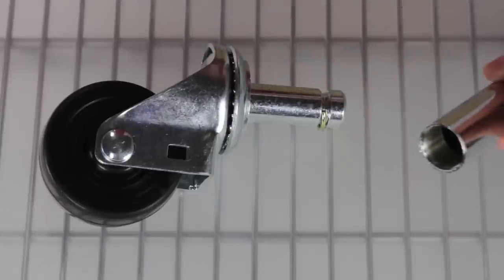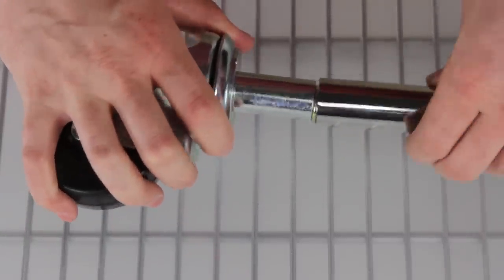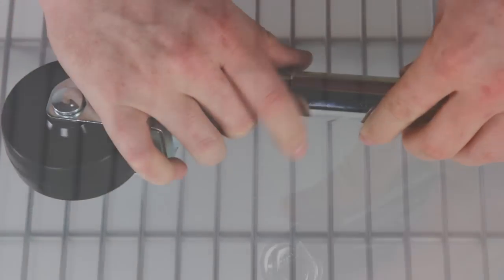Stem casters are named for the solid stem that fits into the post bottom. They're also called universal casters because they fit into standard 1 inch diameter posts.